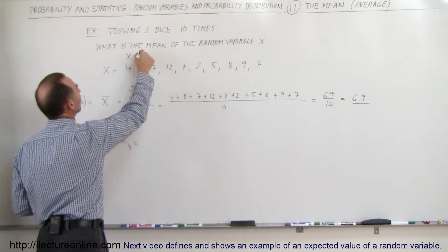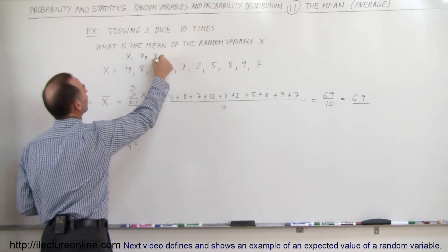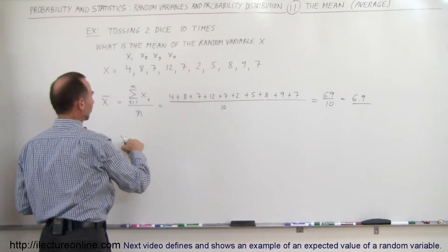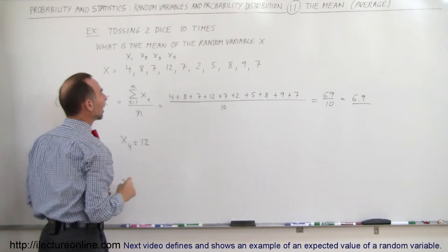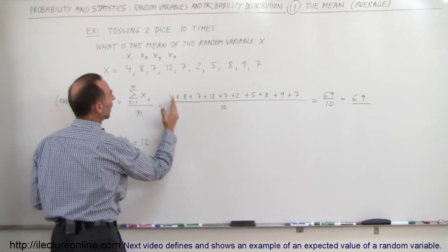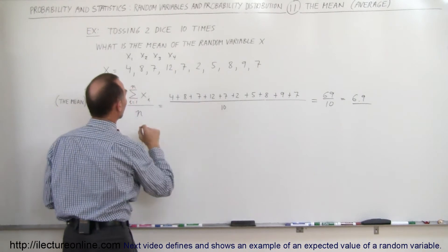So this would be X sub 1, this is X sub 2, this is X sub 3, this is X sub 4. So X sub 4 would be equal to 12 in this case. So X sub 1 is 4, X sub 2 is this, X sub 3 is 7, X sub 4 is 12.